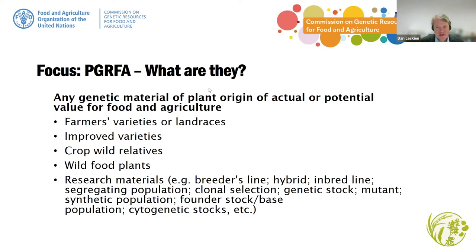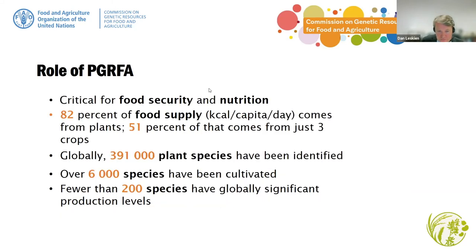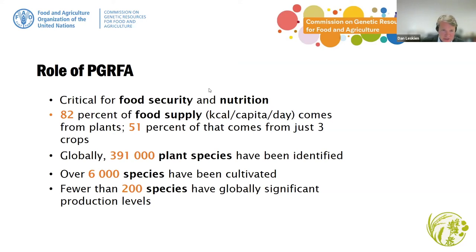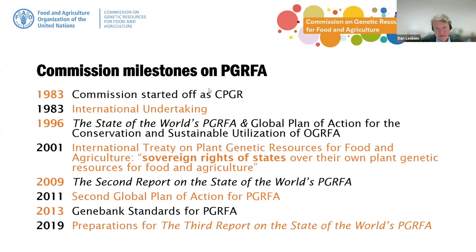Plant genetic resources are any genetic material of plant origin of actual or potential value for food and agriculture — the definition used in the CBD and the Plant Treaty. They include farmers' varieties, landraces, improved varieties, crop wild relatives, wild food plants, and research materials. PGRFAs are critical for ensuring and maintaining global food security and nutrition. About 82% of our daily energy intake comes from plants, and half of that comes from only three crops: maize, wheat, and rice. About 6,000 species have been or are being cultivated, but for fewer than 200 species do we actually have global production statistics.